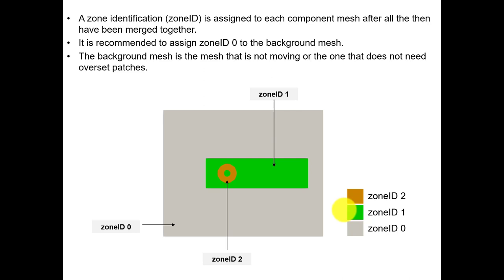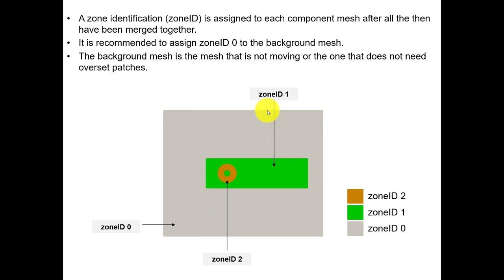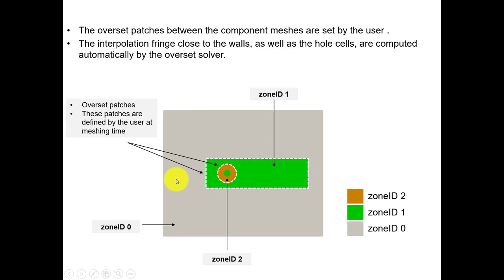After you do the merge of the meshes, you need to do the zone ID identification. You create a new scalar field called 'zoneID', and this is done using the utility 'setFields'. Remember, you do the merge, the regions are created automatically, and then you assign those values. It's good practice that the background mesh - the one that does not have any overset patch - gets ID zero, and then you assign IDs to the other ones. This gives some kind of priority to the interpolation. The top mesh will be the cylinder, then the refinement zone, and then the background takes everything.